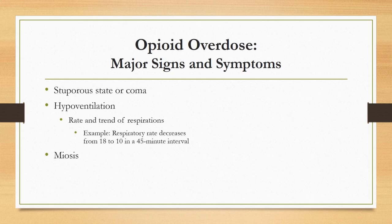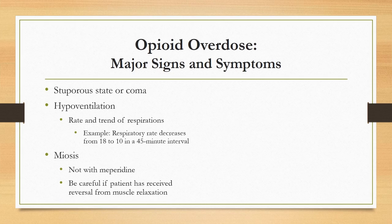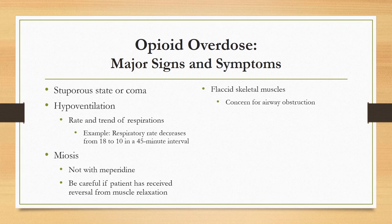For example, if a patient's respiratory rate decreases from 18 to 10 in a 45-minute interval, the nurse should have strong suspicion that excessive opioid effect has occurred. Clinicians should recognize that an overdose from meperidine will not produce the classic overdose sign of miosis because it is structurally similar to atropine. Also, miosis can be masked by atropine or glycopyrrolate administration, which are standard drugs given to reverse muscle relaxation prior to extubation. Skeletal muscles may become flaccid and airway obstruction is a strong possibility; low body temperature is considered a late sign of opioid overdose and is not diagnostic.